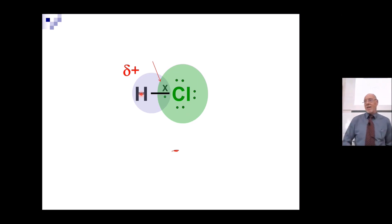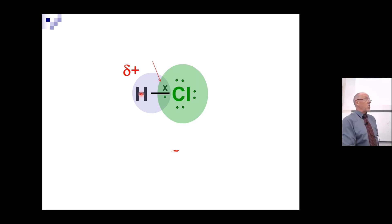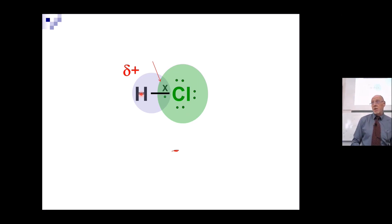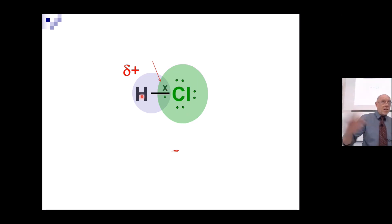Why would that be? The electronegativity of the chlorine is higher. Chlorine has got 17 protons; hydrogen's only got one. Now you're competing for an electron pair — 17 versus one. So the chlorine dominates those electrons, which is why I've drawn them purposely closer to the chlorine.